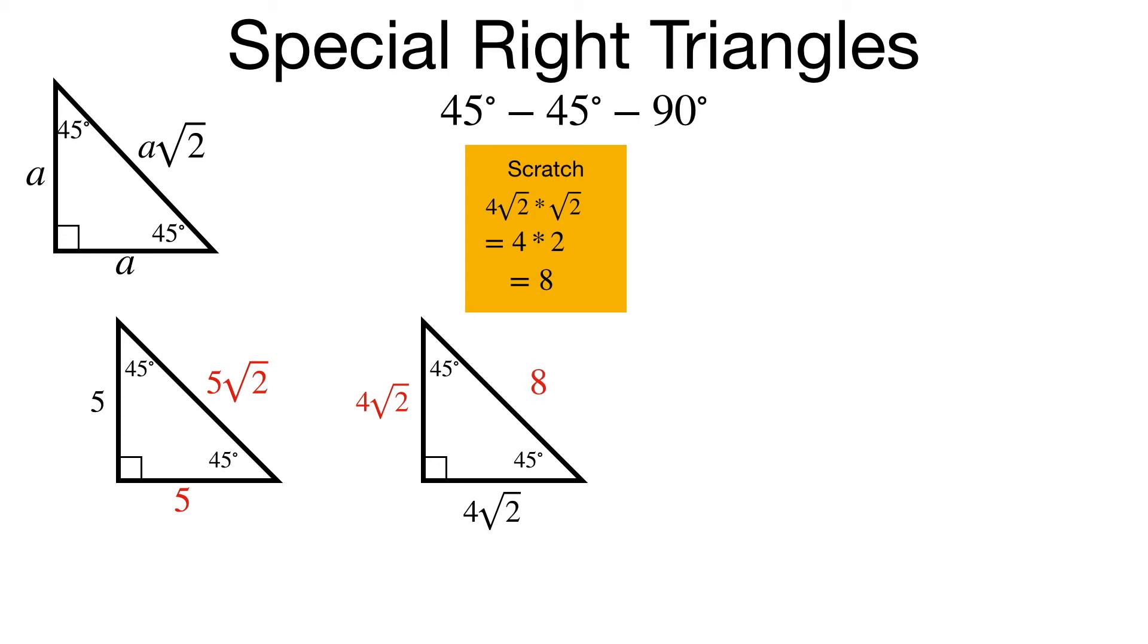Let's try an example now where I know the hypotenuse, but I'm trying to find the leg length. So in this example, my hypotenuse is 10. If to get to the hypotenuse, I multiply by the square root of 2, then to get back to the leg length, we're just going to divide by the square root of 2, so each of those legs is 10 over square root of 2.